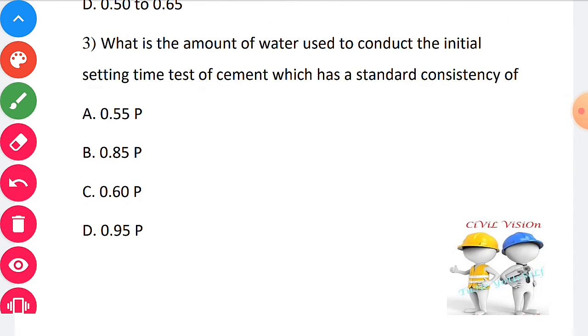Third question: What is the amount of water used to conduct the initial setting time test of cement which has standard consistency? All are very well aware of the initial setting time and final setting time. Vicat apparatus is used to conduct the test for initial and final setting time. The consistency should be maintained above 0.85 P. The correct answer for this question is option B: 0.85 P.